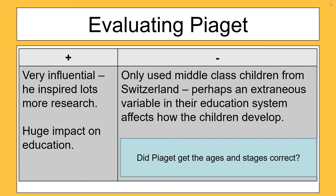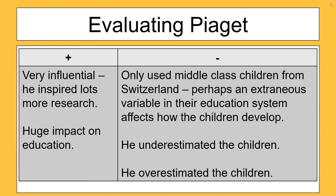Piaget had a bit of a problem when it comes to generalisation, because he used a very specific sample of children — he only used middle class children from Switzerland. So all of his research really does struggle to generalise outside of Switzerland; there may well be an extraneous variable in the Swiss education system which might explain why these children were egocentric or struggling with conservation. Finally, we have evidence from research that Piaget actually underestimated or overestimated the children in his original research. We have the Policeman Doll study and the Naughty Teddy study, which show that children younger than Piaget thought could show skills such as conservation and could view from somebody else's point of view.